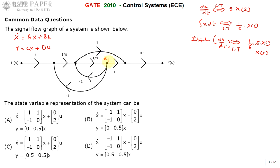We assign x1 as the output of the first 1/s block. The input to that block is dx1/dt, which is x1_dot. The next block is also 1/s, so we assign its output as x2. Since x1 is obtained by integrating x1_dot, and x2_dot integrated gives x2, we have x1_dot = x2. This is an important relationship to remember.